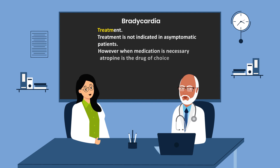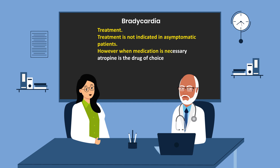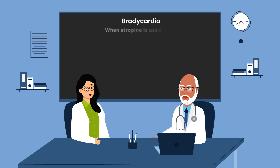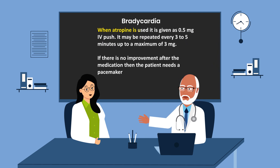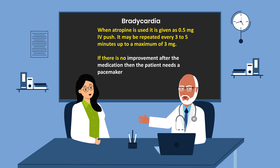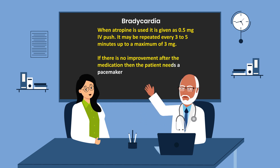What is the treatment for sinus bradycardia? Treatment is not indicated in asymptomatic patients. However, when medication is necessary, atropine is the drug of choice. Atropine is given as 0.5 mg IV push. It may be repeated every 3 to 5 minutes, up to a maximum of 3 mg. If there is no improvement after the medication, then the patient needs a pacemaker.